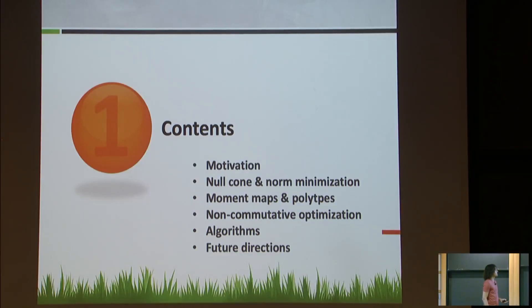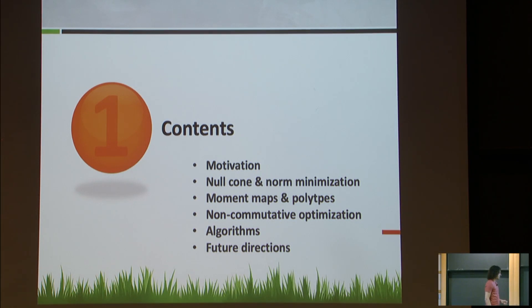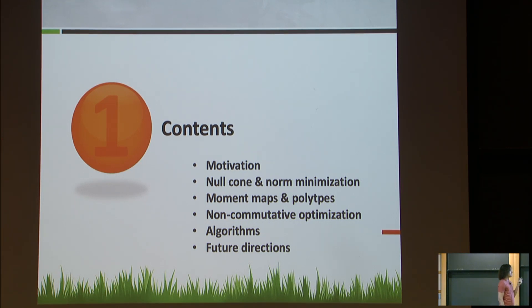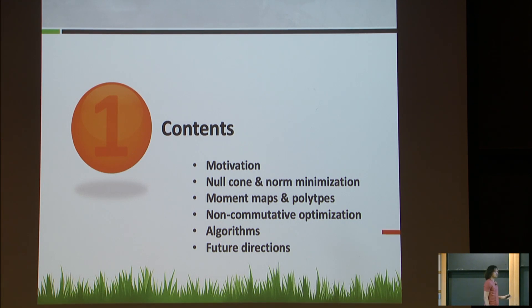What are we going to talk about today? I'm going to give you a lot of motivation, because you need to be motivated to learn something really different. Then we'll talk about the null cone problem and norm minimization problems. We're going to talk about these moment maps, which are non-commutative gradients, and then these magical polytopes that arise from this non-commutative optimization. Then we'll learn how to optimize, give some algorithms, and there are lots of open problems.